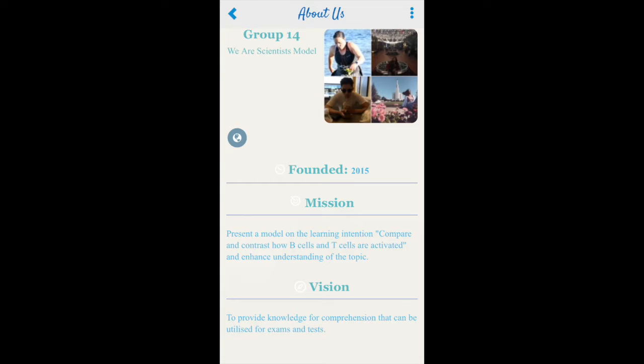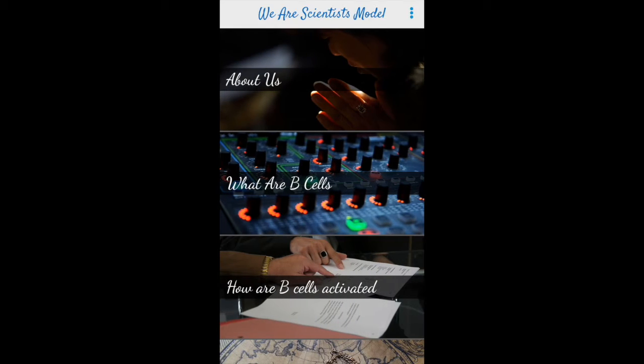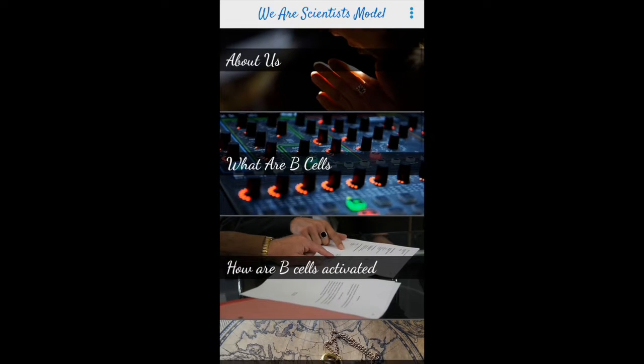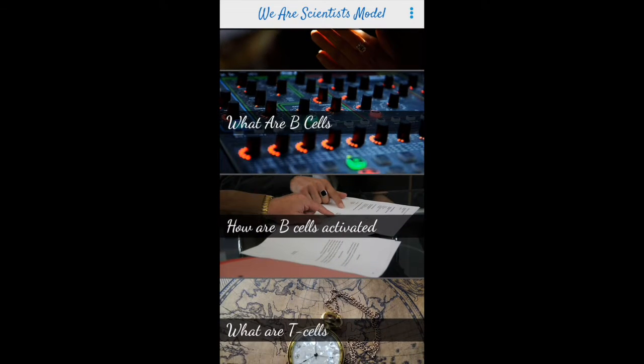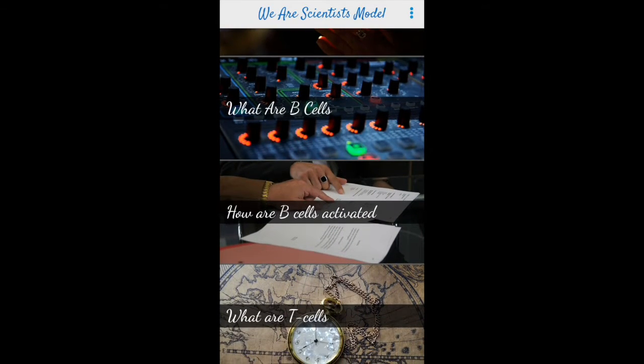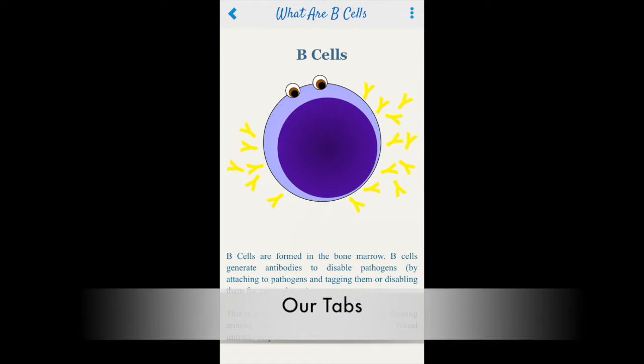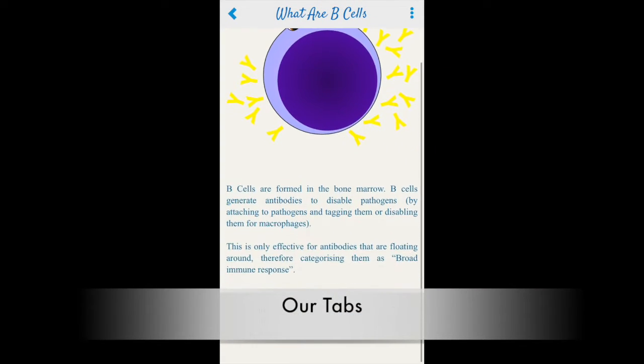Coming back to the homepage, this is an example of the information found on each tab. B cells gives you a quick summary about the B cell.